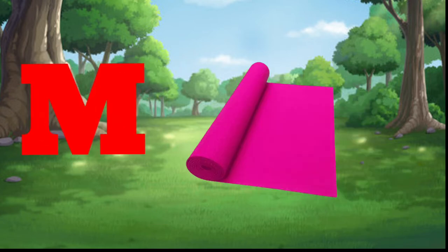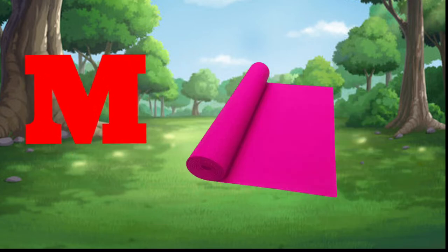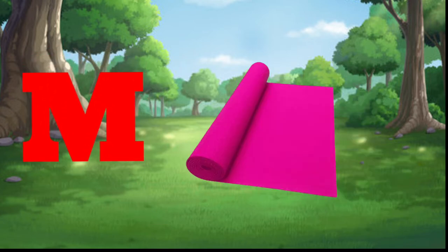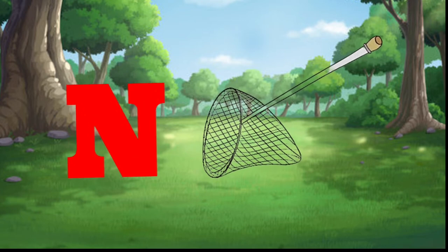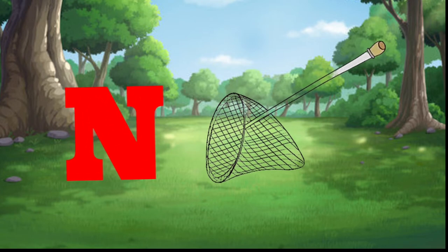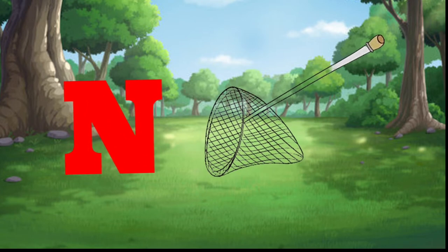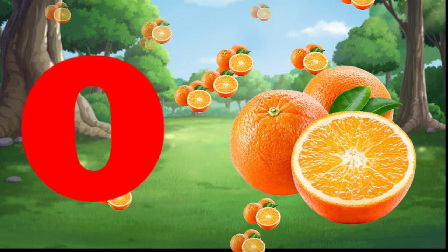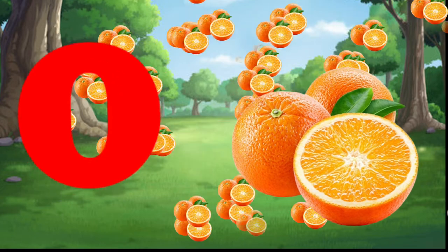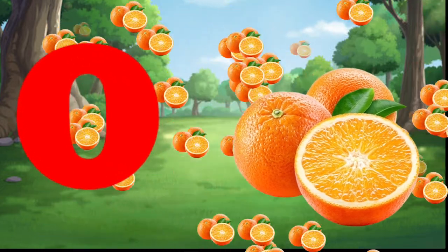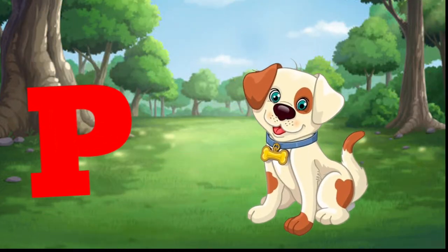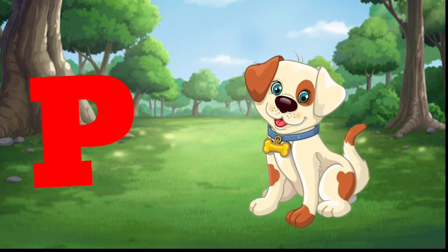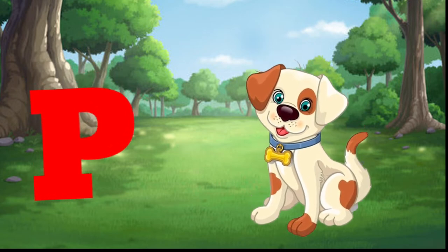M is for mat, m-m-mat. N is for net, n-n-net. O is for orange, o-o-orange. P is for pet, p-p-pet.